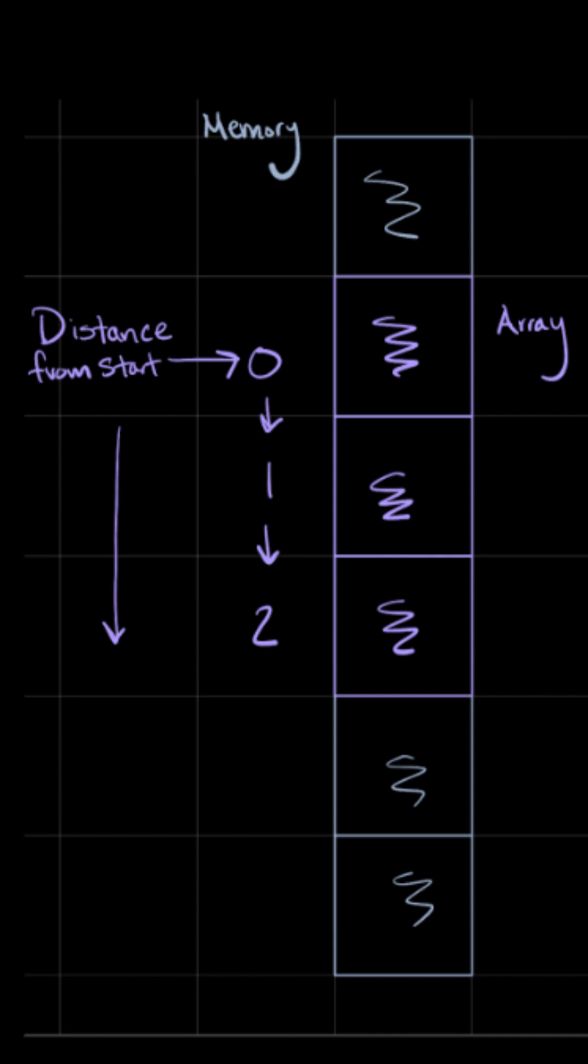So if I'm getting the first element, what I'm really saying is where does my thing start, right? Get me the very starting point of my contiguous space in memory.